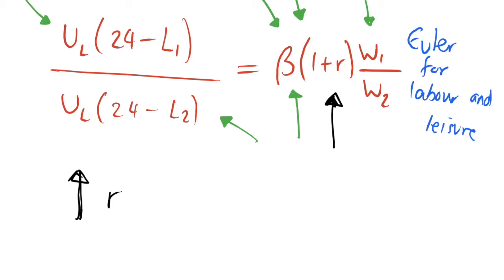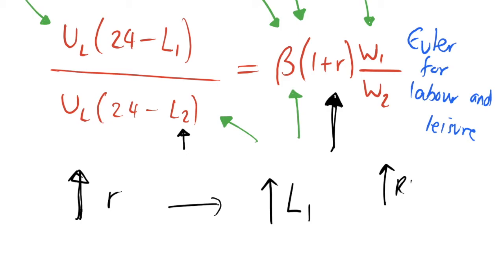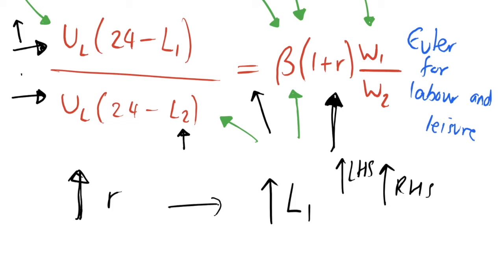Let's consider what this Euler equation for labour and leisure tells us. Consider that we increase the interest rate r. If we increase r, this increases the right hand side of the equation, so to restore equality we must increase the left hand side — by increasing the numerator or decreasing the denominator, or both. This means we increase labour in period 1 and decrease labour in period 2. The intuition is that a higher interest rate makes it optimal to work more today, earn more income in period 1, save it at the higher interest rate, and thereby increase consumption in period 2 even more.